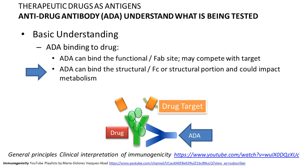Anti-drug antibodies could also bind outside the antigen binding site, and the drug may still be able to engage with the target. However, because binding can occur at the Fc portion — which has several effector functions — you need to assess whether this binding outside the antigen binding site is impacting efficacy. Even non-neutralizing antibodies could still impact efficacy; see Part 1 of the immunogenicity series for more details.